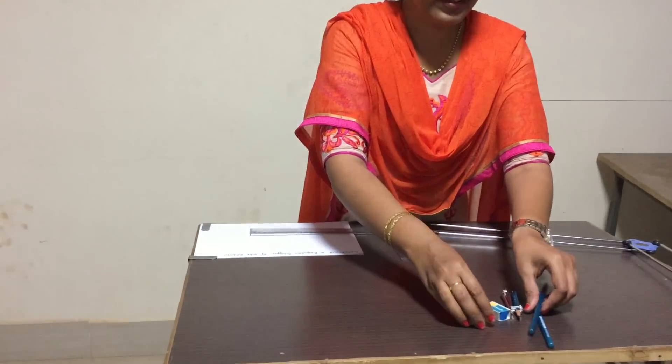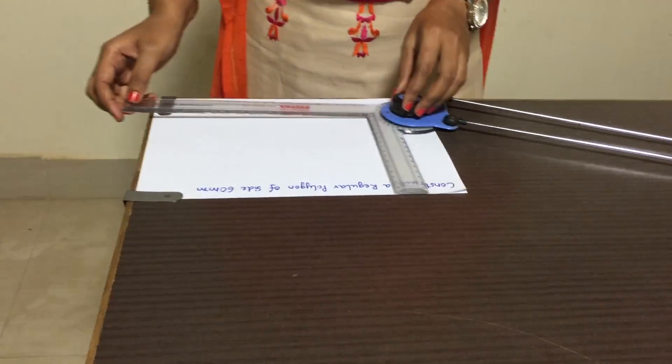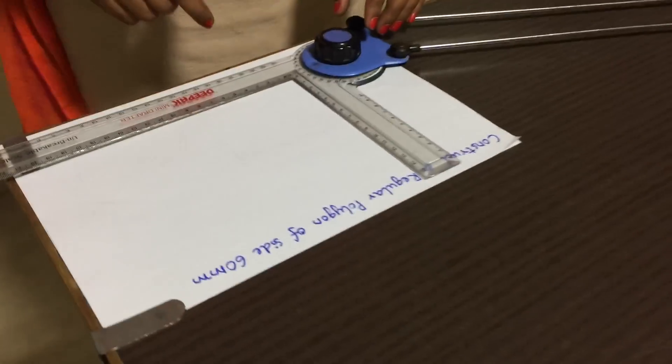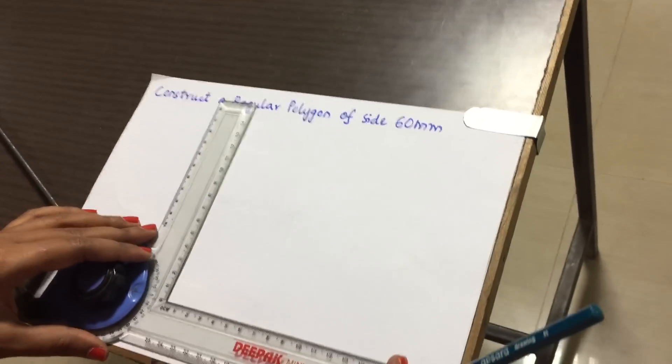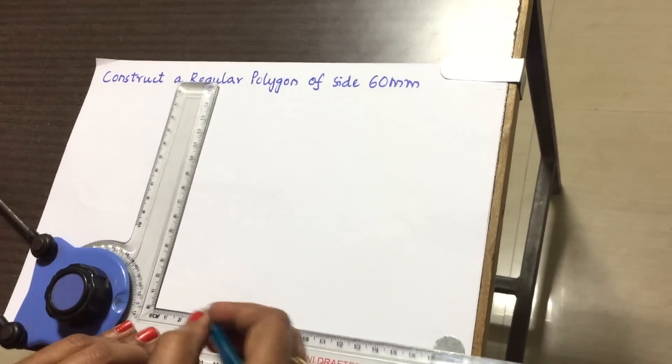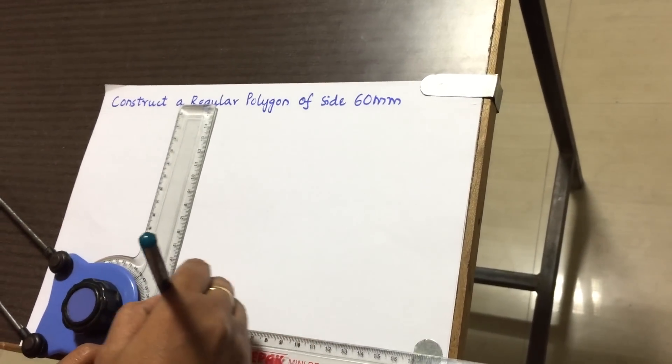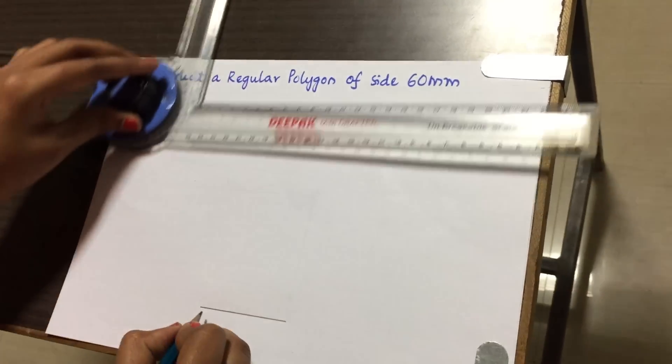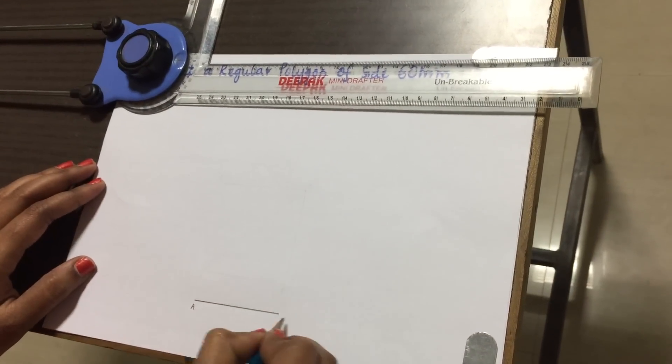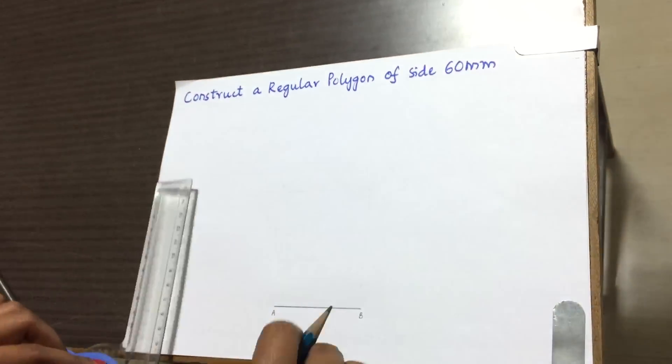So let's get started with the drawing of a regular polygon. I have taken a polygon of side 60 mm. For that I will take an H pencil and draw a line of side 60 mm. Name it as AB. On this line AB, draw a square.